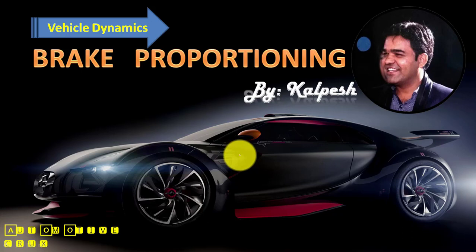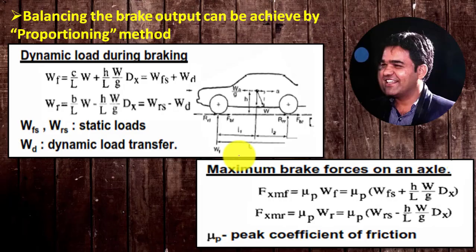During the design of any vehicle's braking system, it is preferable that both the front axle and the rear axle lock up at the same time simultaneously. Yet this is not possible over the complete range of operating conditions to which the vehicle is exposed. But with the help of the brake proportioning method, we can achieve variation in the brake force at the front axle and the rear axle.